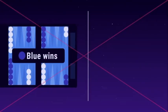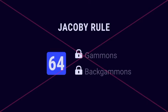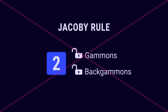Money game is when you play one game at a time for an agreed stake per point with a final winner after each game. In money game, the Jacoby rule applies. This means that you can only win a gammon or backgammon if the doubling cube has been used during the game. The Jacoby rule is not used in match play.